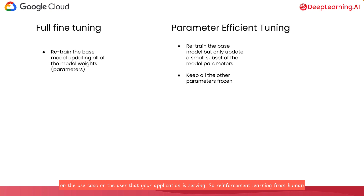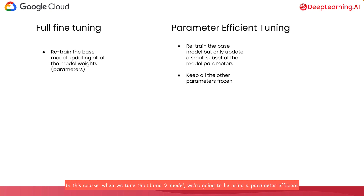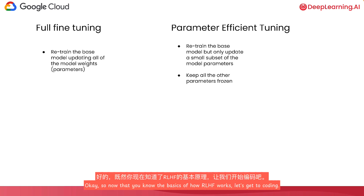Reinforcement learning from human feedback can be implemented with either full fine tuning or parameter efficient tuning. In this course, when we tune the LLAMA2 model, we're going to be using a parameter efficient implementation, which means the training job won't update all of the base large language model weights — only a smaller subset based on a parameter efficient tuning technique. Now that you know the basics of how RLHF works, let's get to coding.